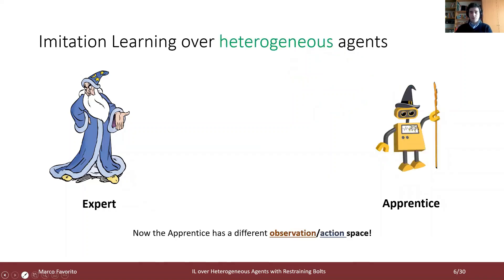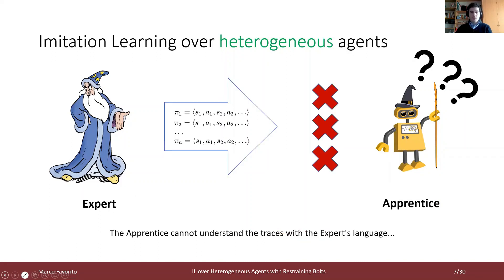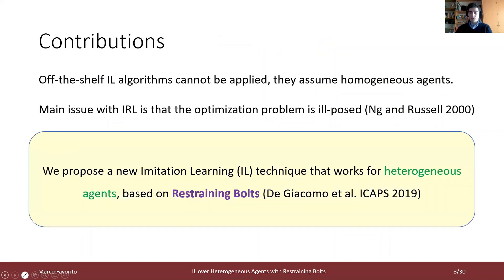Consider the scenario in which the apprentice agent has a different observation or action space. In this scenario, the previous approach won't work because the apprentice cannot understand the traces, since they are expressed in a different language — the observation and action space of the expert. Most common off-the-shelf imitation learning algorithms assume homogeneous agents, which is a problem here. Also, the main issue with inverse reinforcement learning is that the optimization problem is ill-posed, and the associated numerical optimization and regression problems are often brittle.